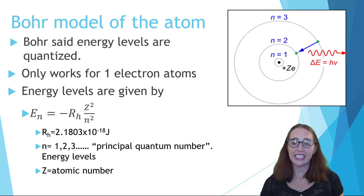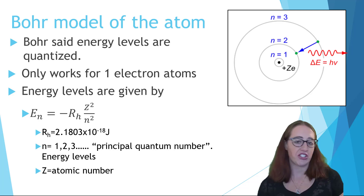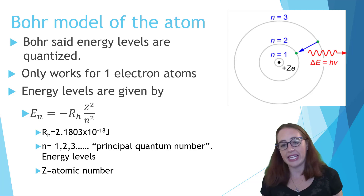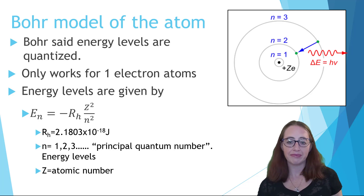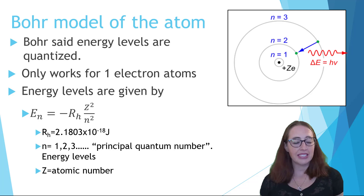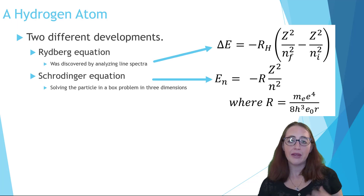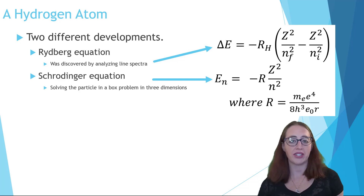We can calculate the energy of each energy level using this equation. The Rh stands for the Rydberg constant, Z for the atomic number—which in hydrogen's case is 1—and n is the energy level we're trying to calculate. Let's talk about how this was discovered. It was actually discovered twice in two different ways, and these two ways agree.